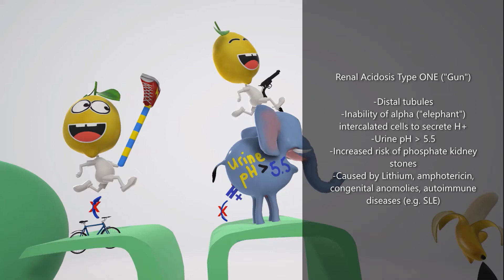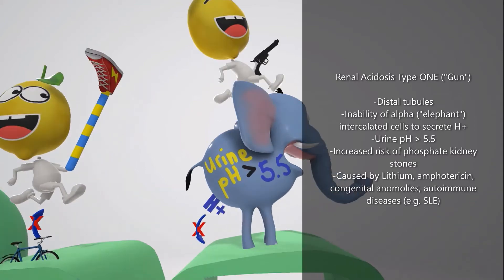There's a buildup of hydrogen in these cells which leads to a buildup of hydrogen in the blood, resulting in acidemia. Importantly, in RTA type 1 the urine pH is greater than 5.5, because we're unable to secrete hydrogen into the urine. Along with this, RTA type 1 is associated with an increased risk for calcium phosphate kidney stones due to the increase in urine pH.